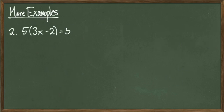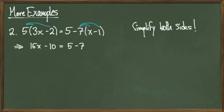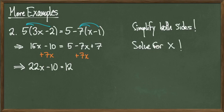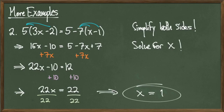For our last example, we'll solve the equation 5 times the quantity 3x minus 2 equals 5 minus 7 times the quantity x minus 1. Even though this looks more involved, all we have to do is simplify the left and right-hand sides and then solve like normal. Once we distribute the 5 and the negative 7, we get 15x minus 10 equals 5 minus 7x plus 7. Adding 7x to both sides gives 22x minus 10 equals 12. Then adding 10 to both sides gives 22x equals 22, and dividing both sides by 22 gives the final solution x equals 1.